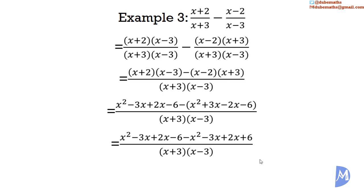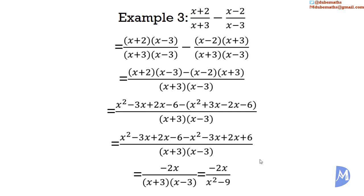We simplify by collecting like terms: x² minus x² equals 0; negative 3x plus 2x minus 3x plus 2x gives negative 2x; and negative 6 plus 6 equals 0. So we remain with negative 2x over (x plus 3)(x minus 3). Since (x plus 3)(x minus 3) equals x² minus 9, this fraction can also be written as negative 2x over (x² minus 9).